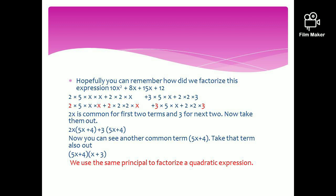Hopefully you can remember how we factorized an expression like 10x squared plus 8x plus 15x plus 12. Initially, we separated the 4 terms into 2 each, then took the common terms out, and then factorized. In that case, it turns into 5x plus 4 times x plus 3. If you are new to this video, please watch my Factorization Video Number 2.